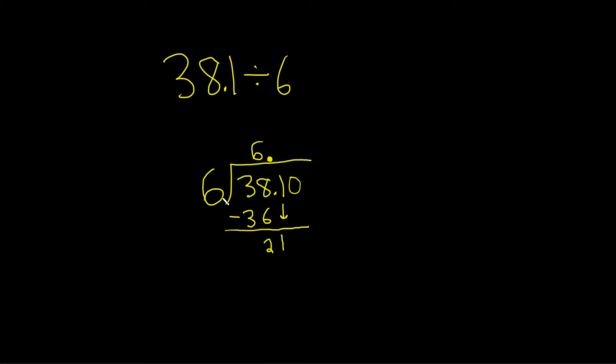Then you do the process again. How many times does 6 go into 21? 3. So 3 times 6 is 18, and then you subtract to get 3.